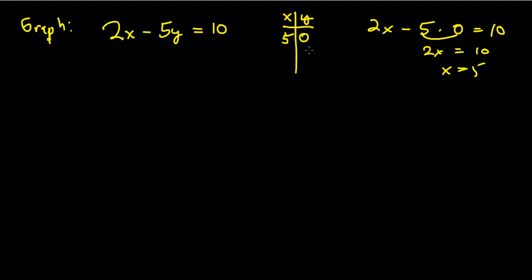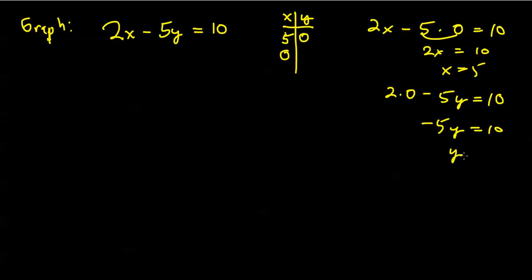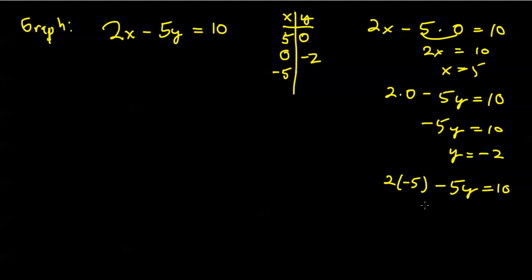We've spotted the x-intercept. Similarly, I can find the y-intercept by letting x be 0 and solving for y. If x is 0, 2 times 0 is 0, so minus 5y equals 10, meaning y equals negative 2. We've established the y-intercept. Let's get a third confirming point. If x is minus 5, substituting gives minus 10 minus 5y equals 10, resulting in minus 5y equals 20, so y equals minus 4.